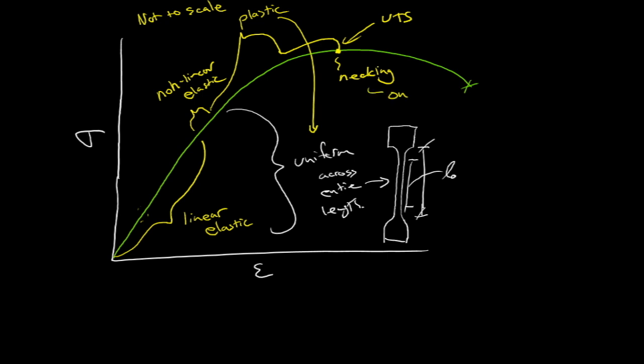Necking is the onset, or the beginning, of non-uniform plastic deformation. And so what that looks like is somewhere within the gauge length, you get this little region where an instability is set up. And you get plastic deformation that is not spread across the entire length, but instead is occurring in one region, one local region.